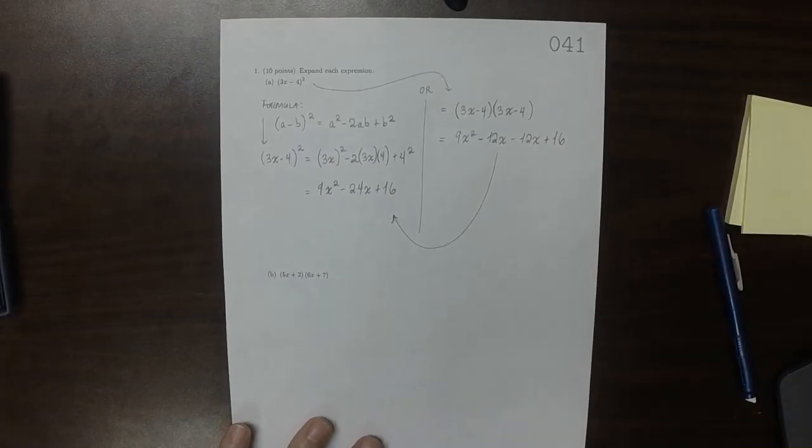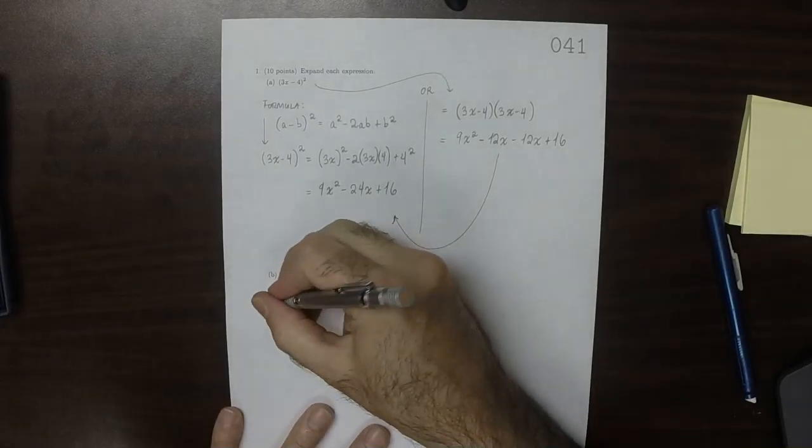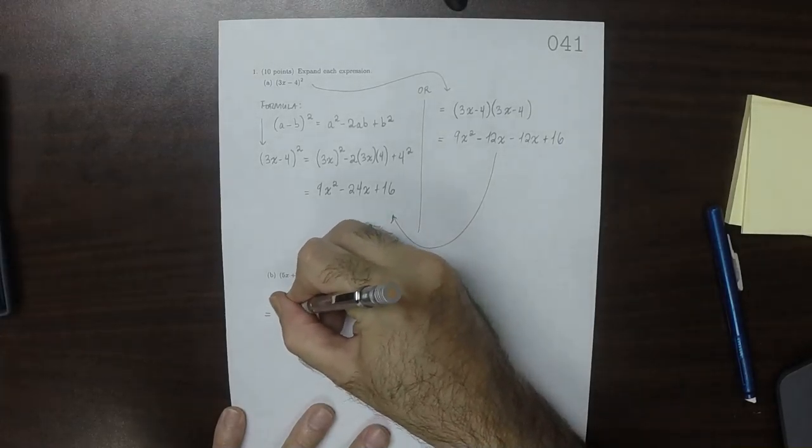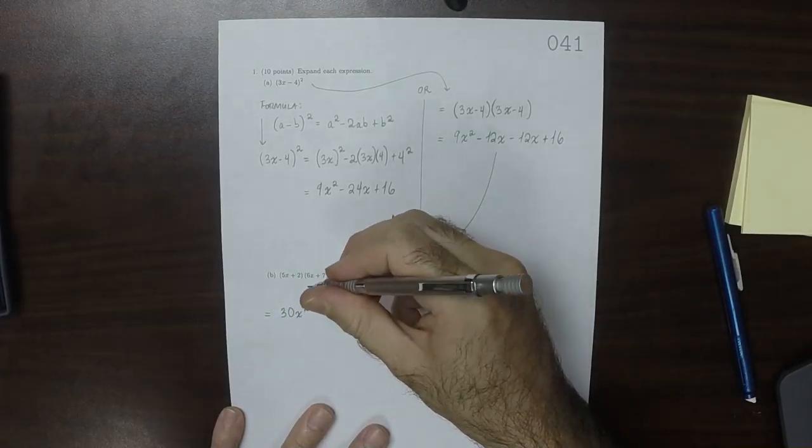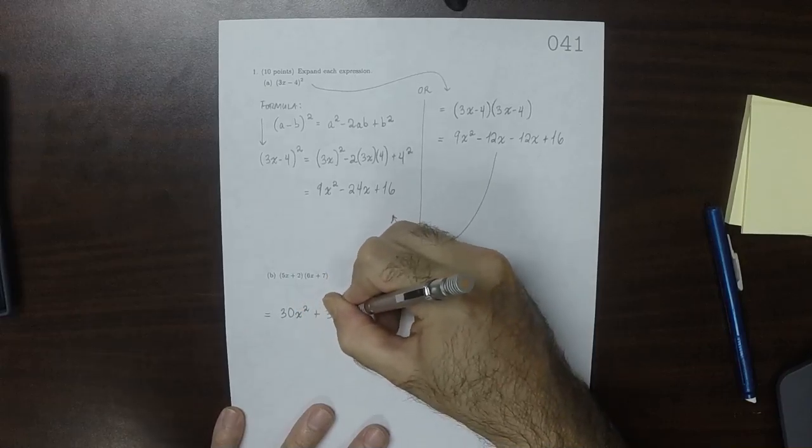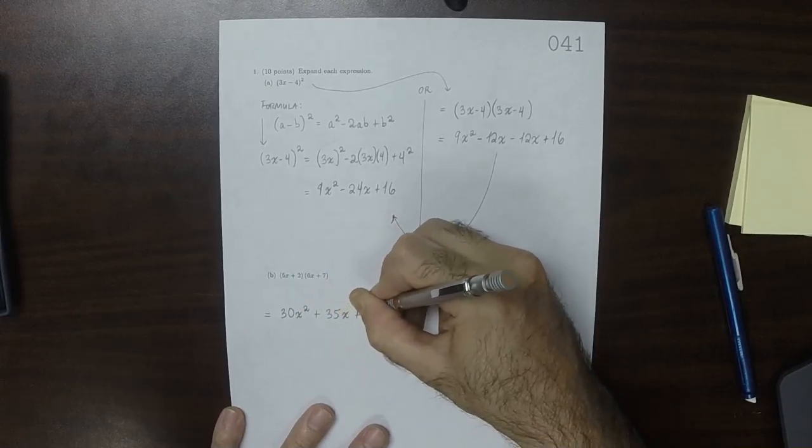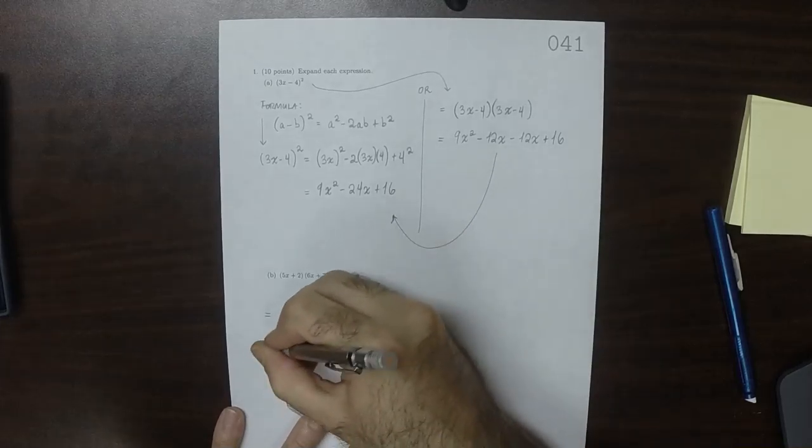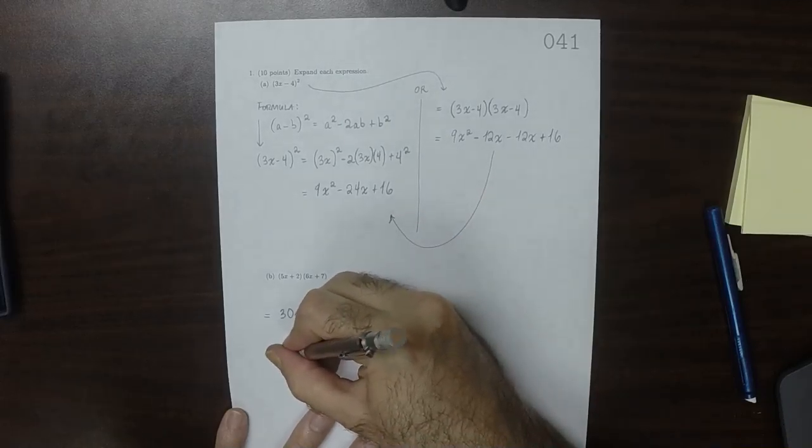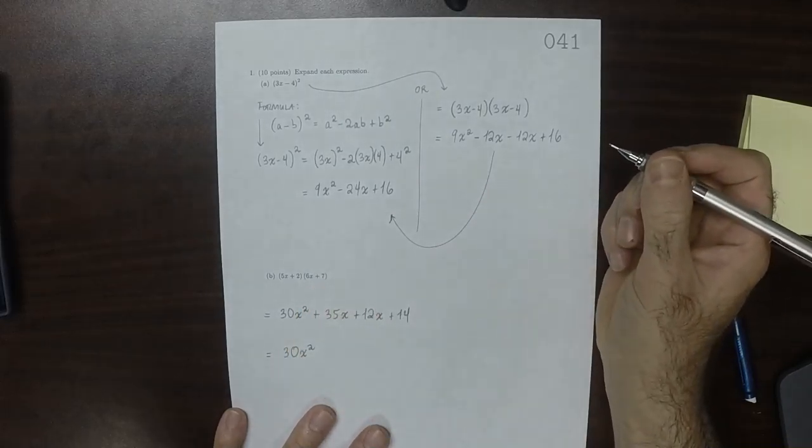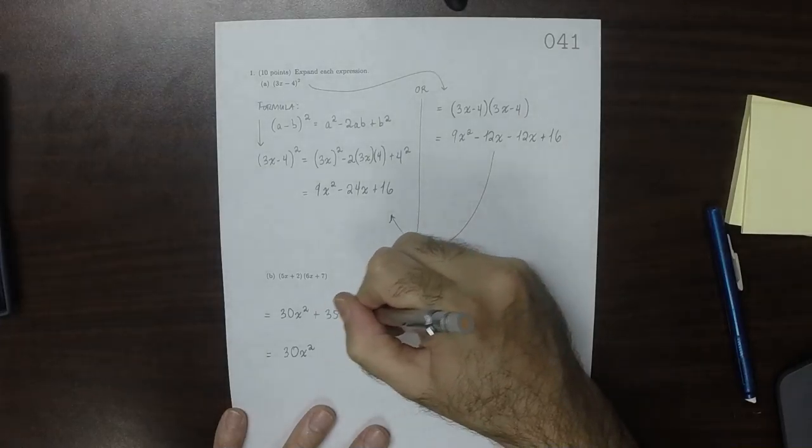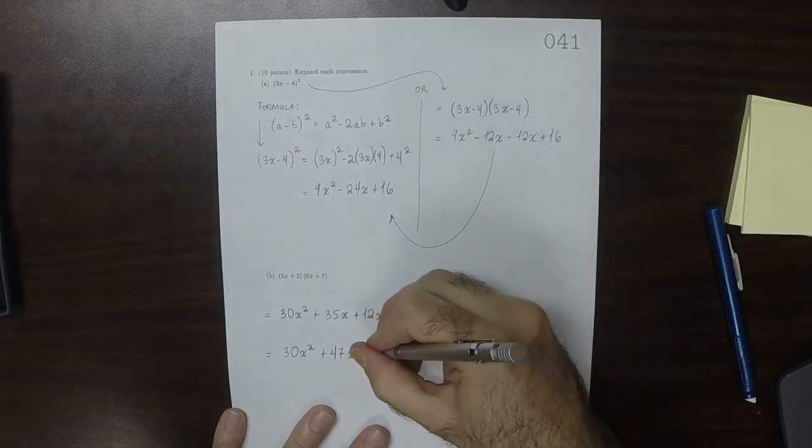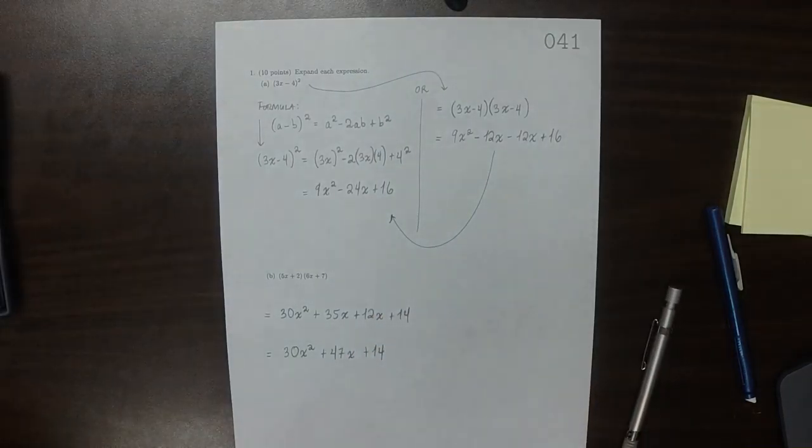So then part B just requires FOIL. So that would be 30X squared plus 35X plus 12X plus 14, and then collecting, that would be 30X squared, plus 47X plus 14.